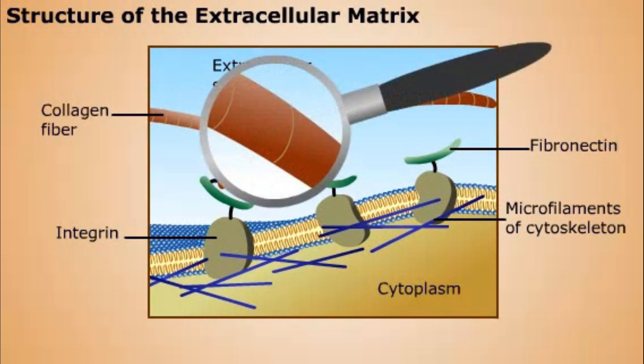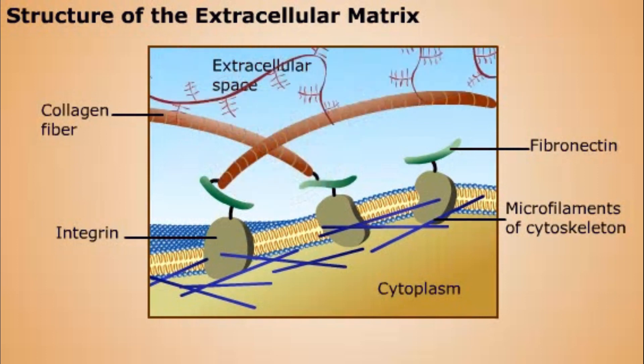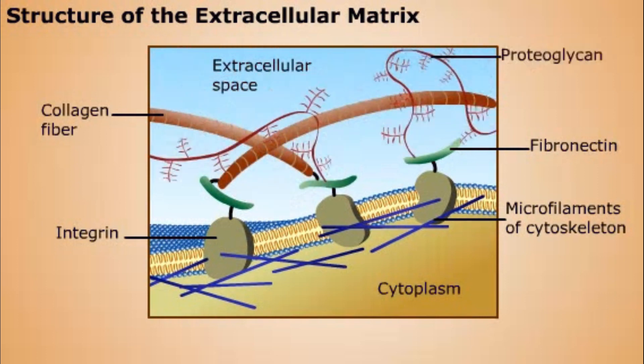The fibronectin molecules associate with collagen fibers outside the cell. These fibers are formed by cross-linking collagen molecules, which are proteins with a triple helical structure. Finally, the collagen fibers are anchored in place by proteoglycans, large molecules containing both protein and carbohydrate.